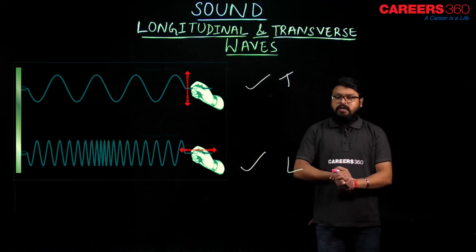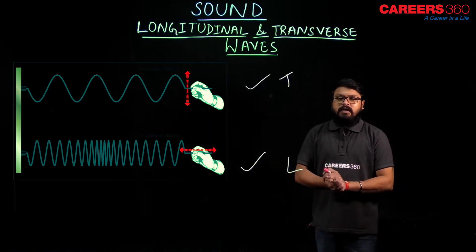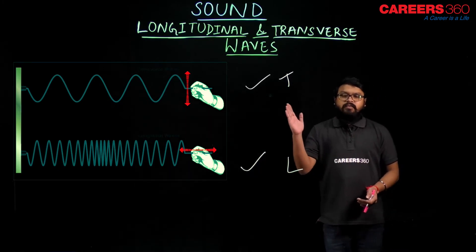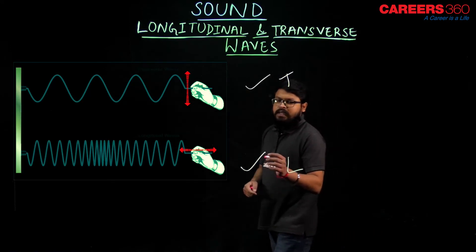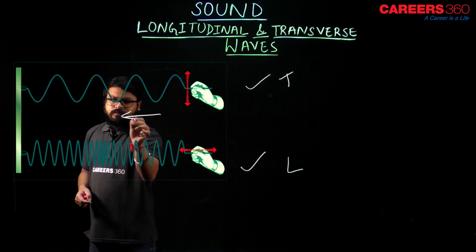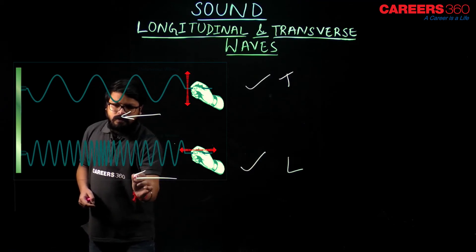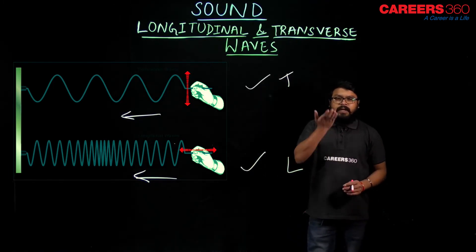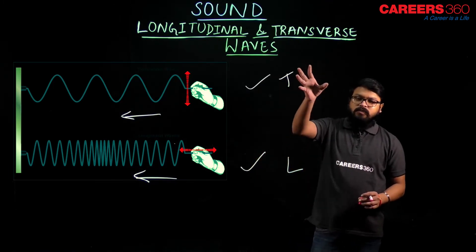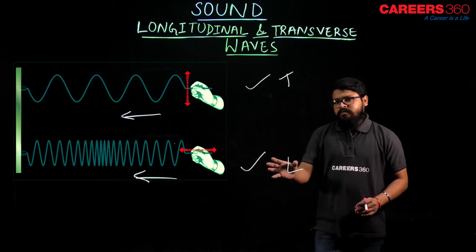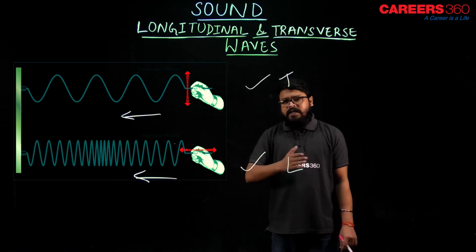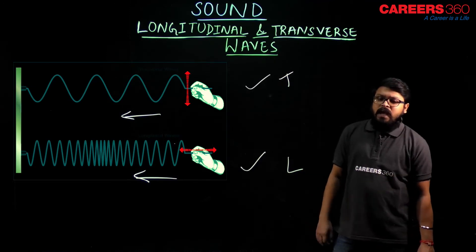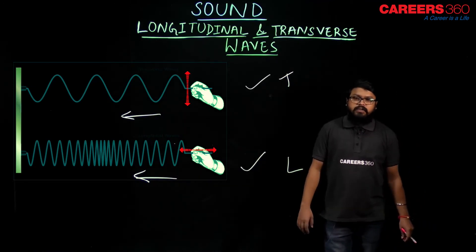This experiment makes it clear about the types of waves — longitudinal and transverse. If the particles of the medium vibrate perpendicularly to the direction of motion of the wave, those are transverse waves. If the direction of vibration of the particle is in the same direction as the motion of the wave, those are longitudinal waves. And our sound wave is nothing but a longitudinal wave.